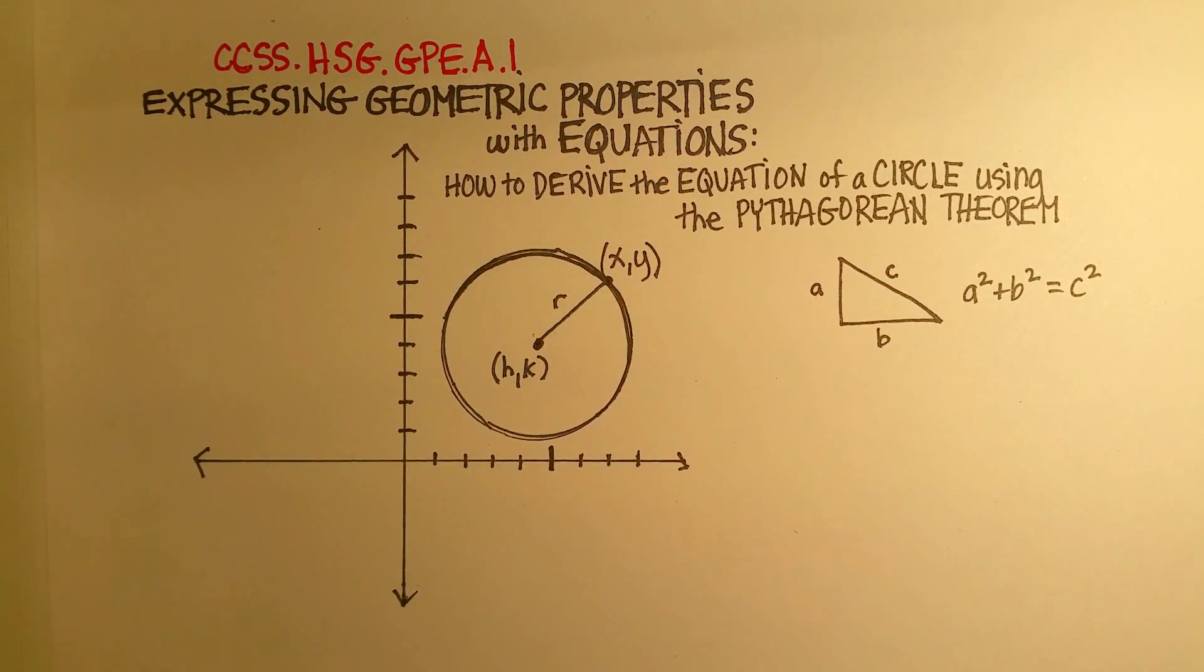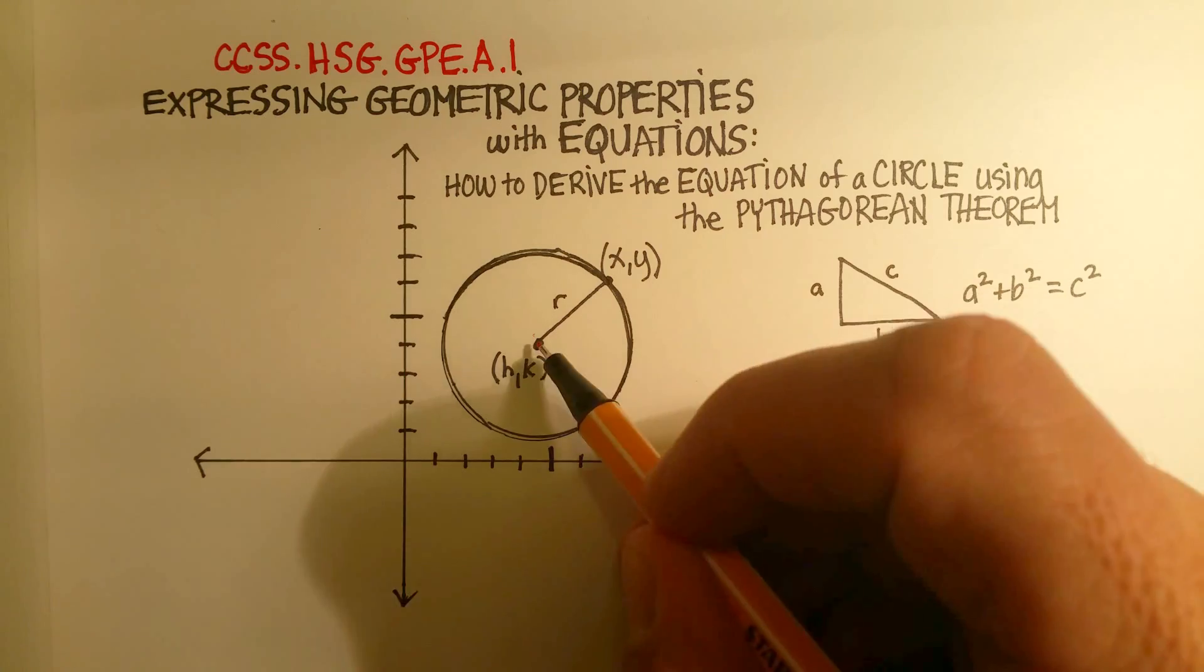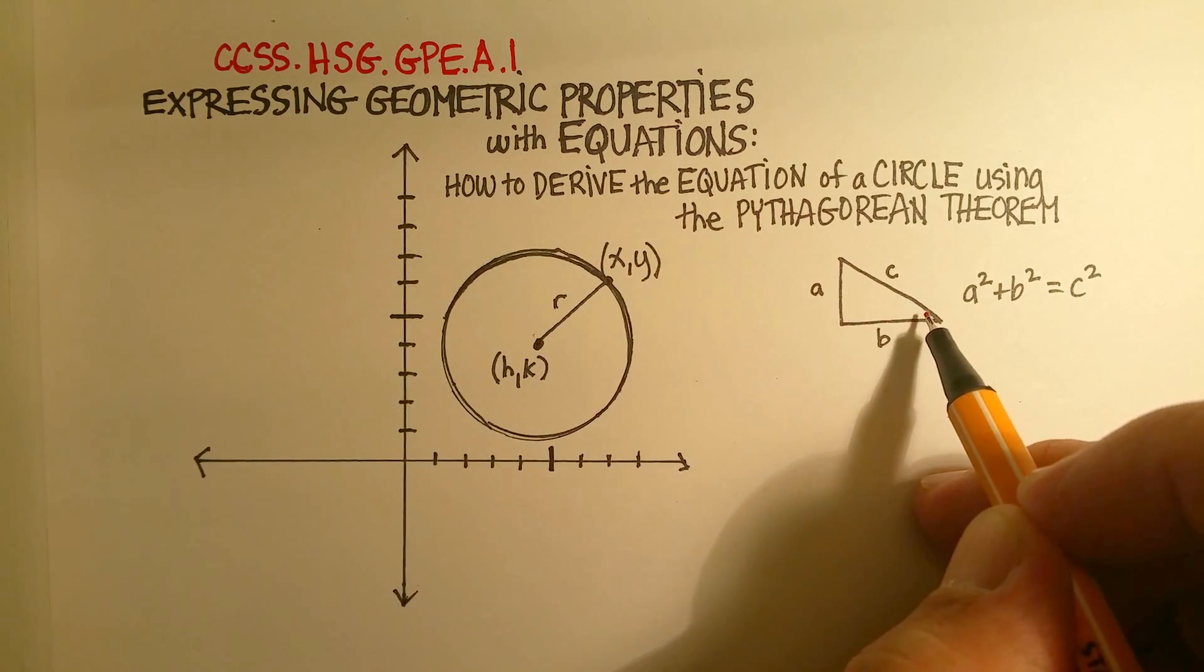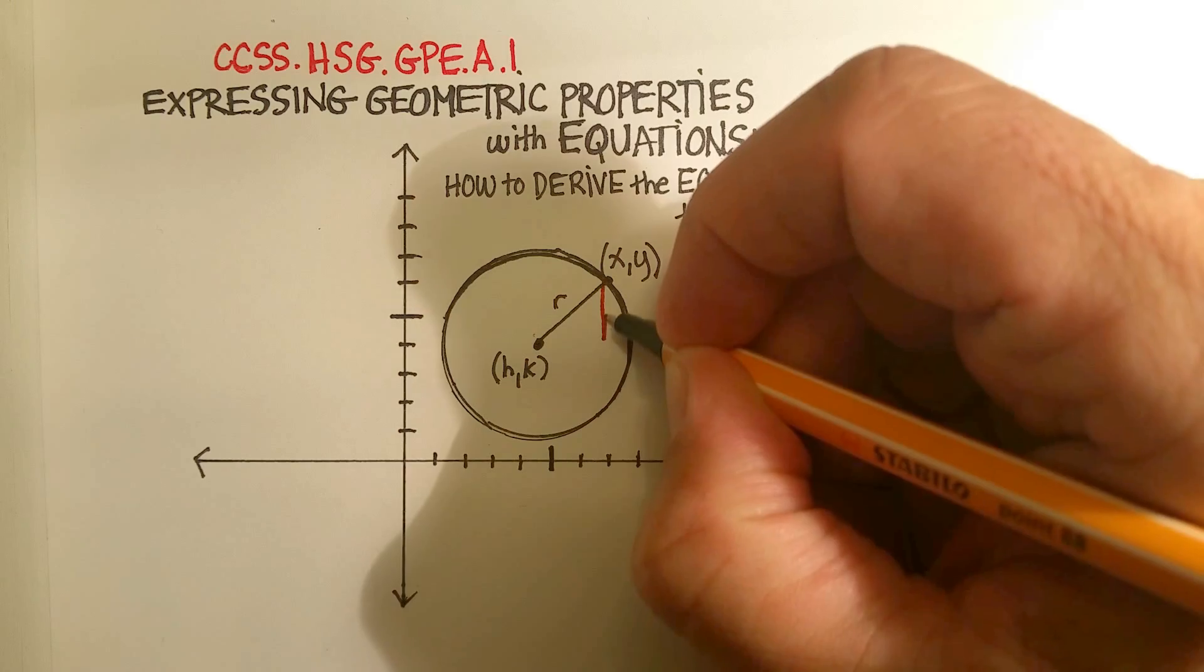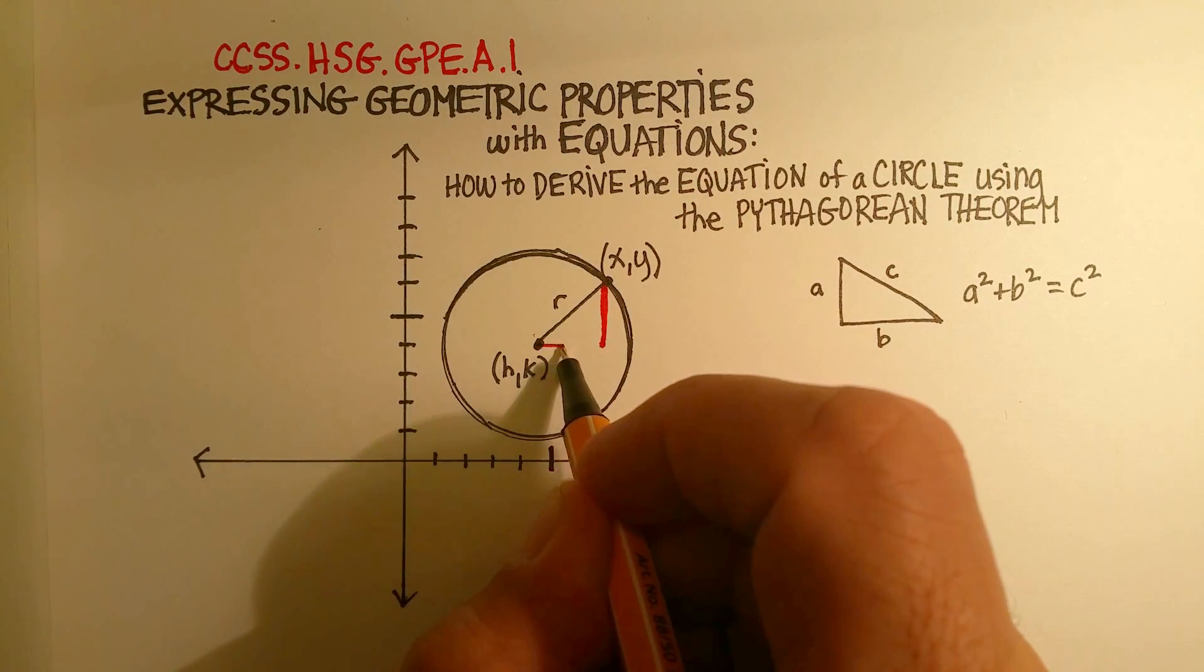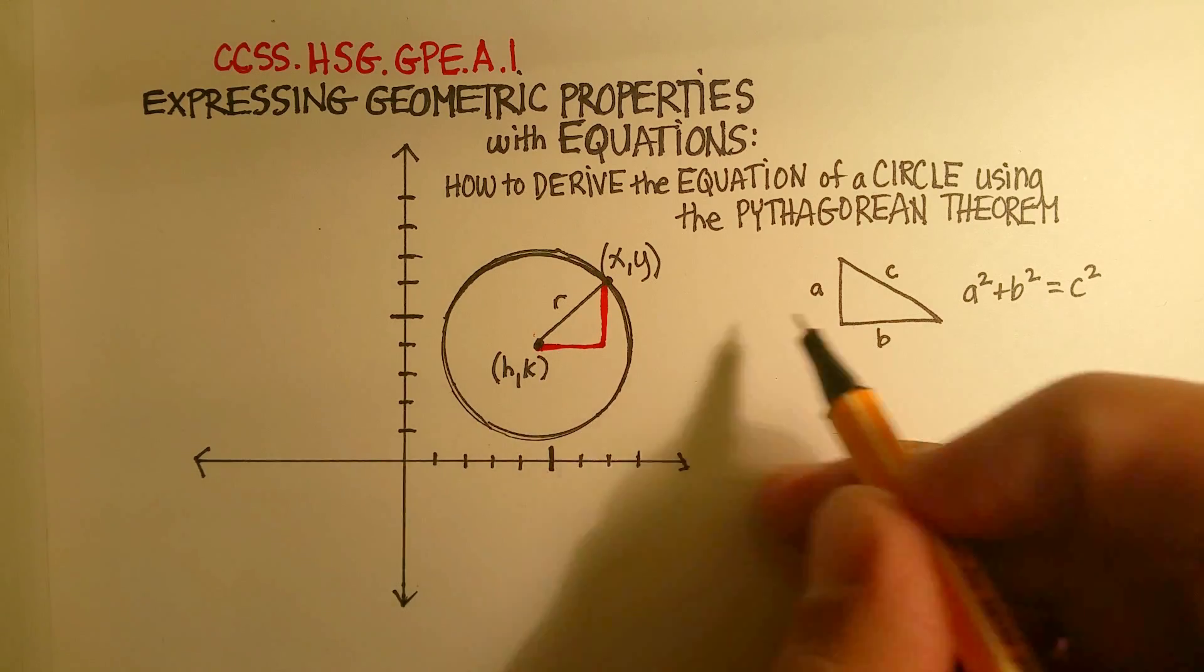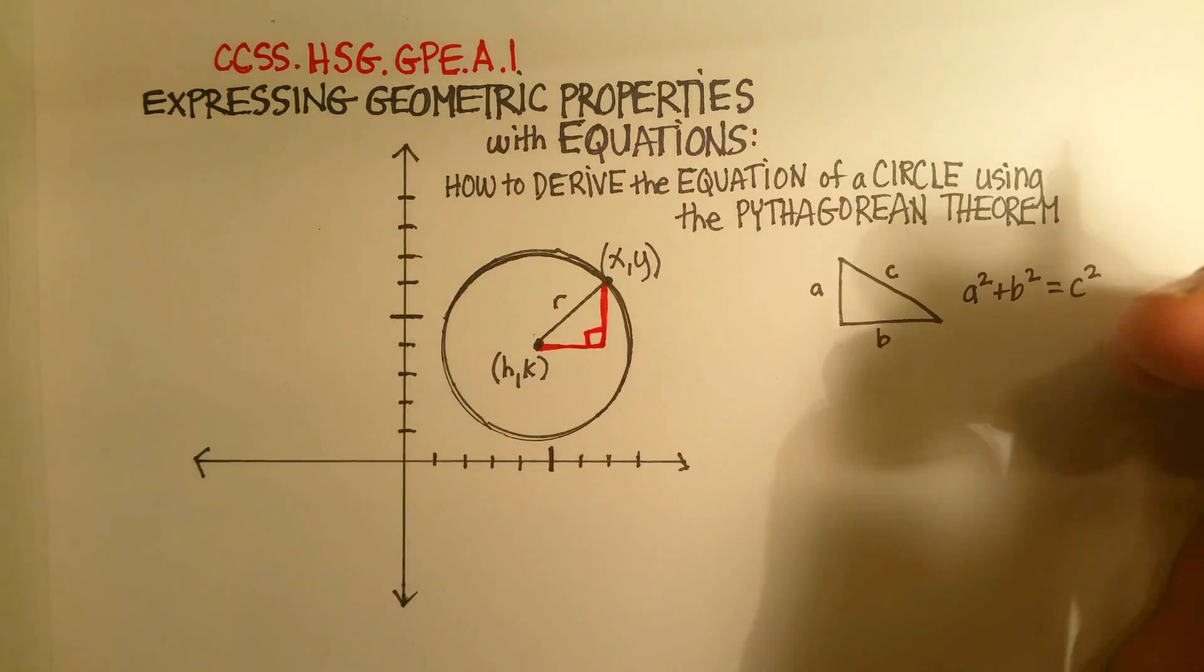Now, this is where the Pythagorean Theorem starts to come into play. If we take this as the hypotenuse of our right triangle, let's drop a line straight down and draw a line straight over to create our own right triangle.